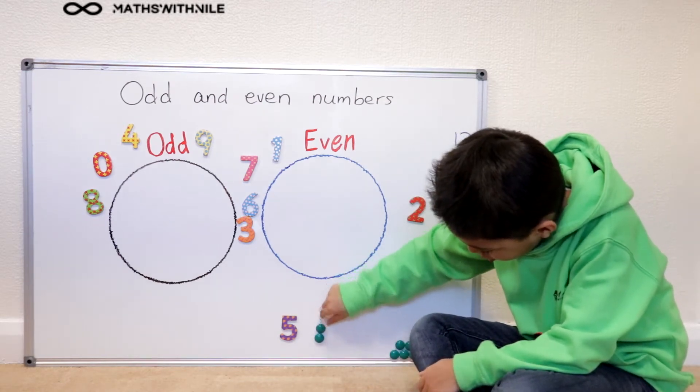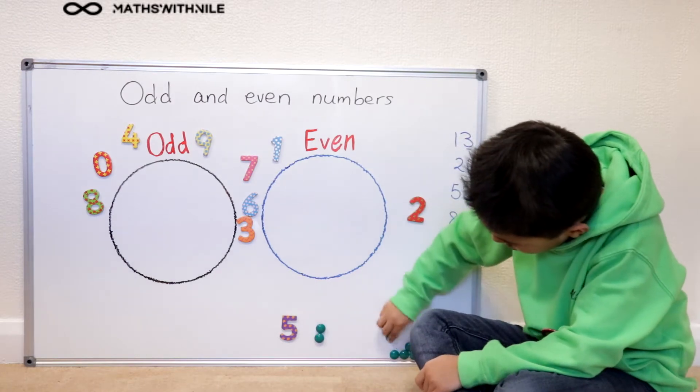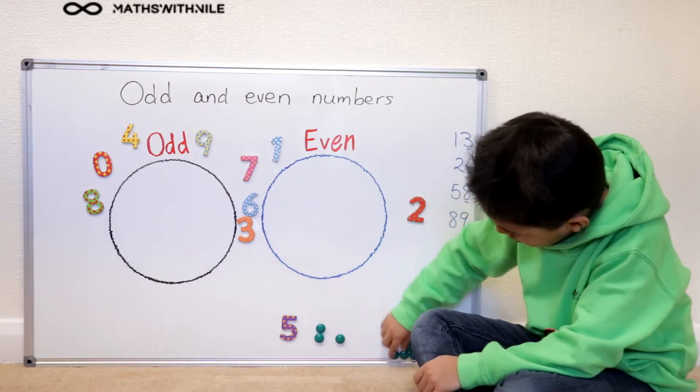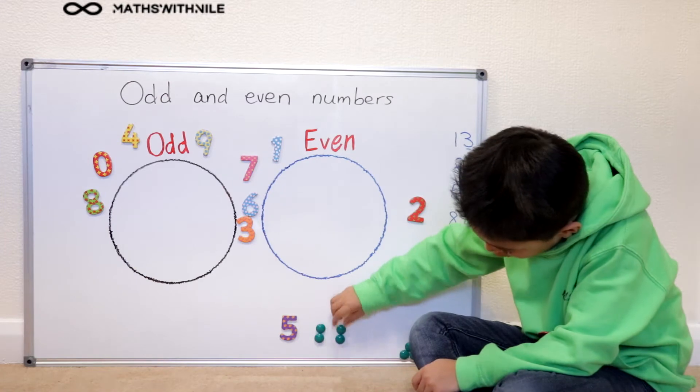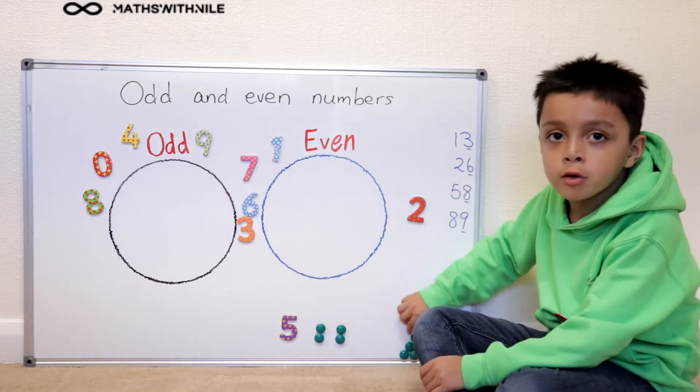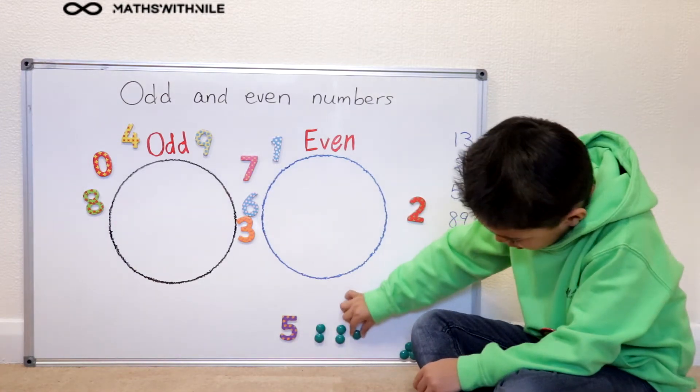One, two, three, four, so that's two lots of twos and we got one.